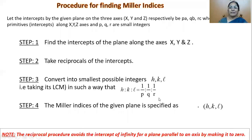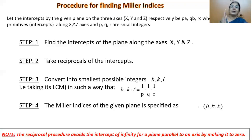Why do we have to take the reciprocal of the intercepts? The reciprocal procedure avoids the intercepts of infinity for a plane parallel to an axis by making it zero. Whenever the plane is parallel to a particular axis, the intercept should be taken as infinity, because only at infinity can that plane intersect that axis. Handling infinity is very difficult, so Miller suggested: find the intercepts, find the reciprocal, then reduce it into a simple number. It is then very easy to designate the plane in the crystal.